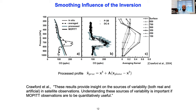MOPITT is indeed seeing the pollution plume, but because of the smoothing influence of the retrieval and low sensitivity near the surface, we can't isolate the signature sharply — but the information is there in the retrieval, in a smoothed representation. One conclusion from the Crawford et al. paper was that these results provide insight on the sources of variability, both real and artificial, in satellite observations, and that understanding these sources is important if MOPITT observations are to be quantitatively useful. MOPITT has provided the longest continuous measurements of carbon monoxide from space.